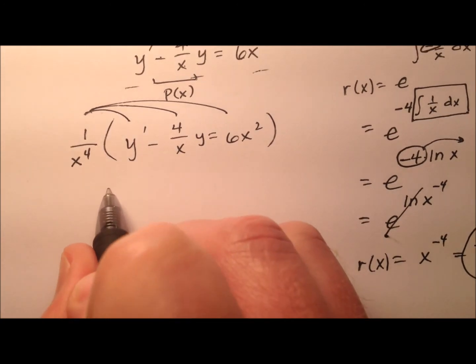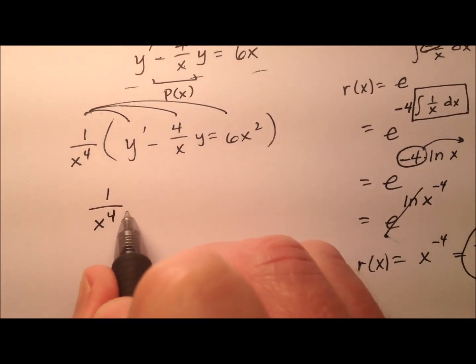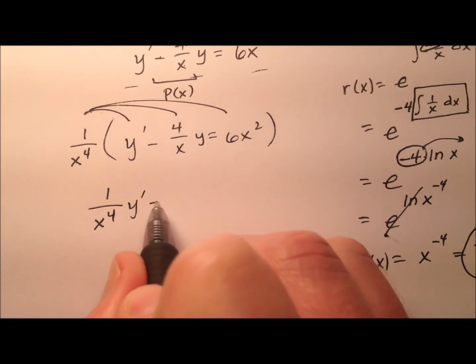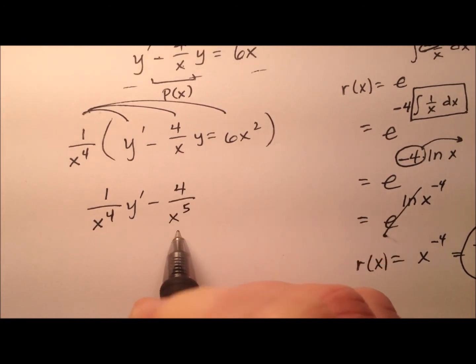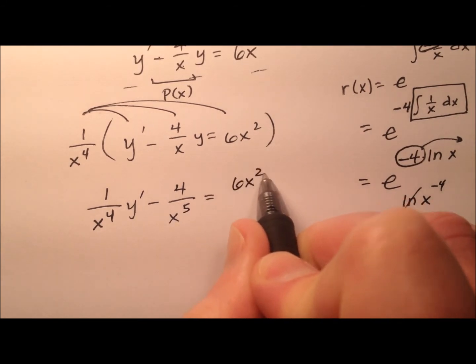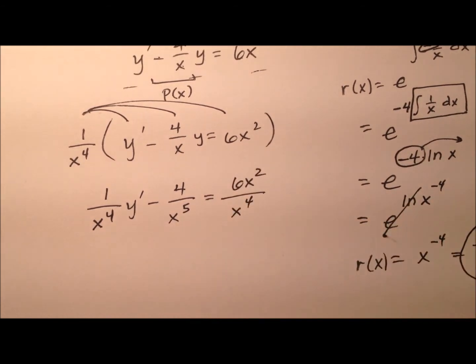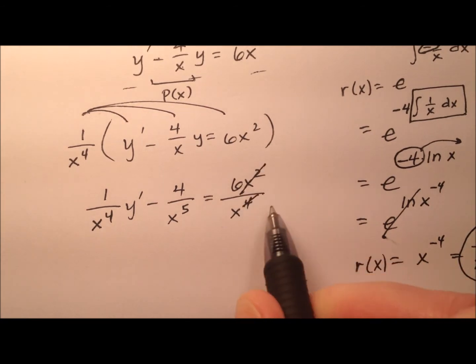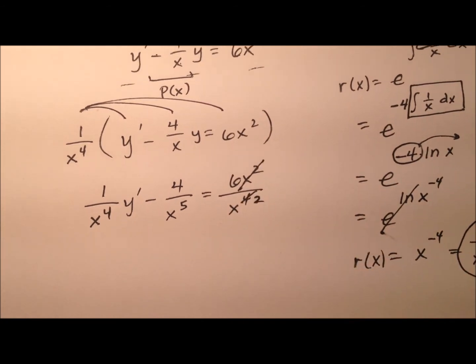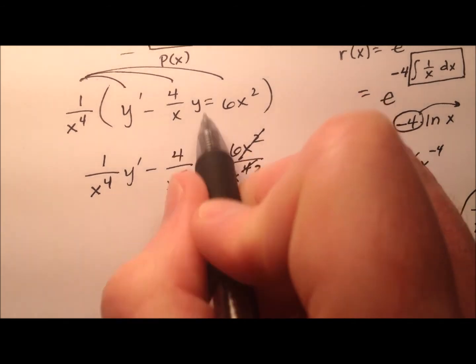Let's go ahead and see what that looks like. So 1 over x to the 4th, y prime minus 4 over x to the 5th equals, and it looks like 6x squared over x to the 4th. Well, what I can do is cancel this with the 4 and make that a 2. So let's go ahead and rewrite this and see what we have.